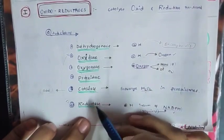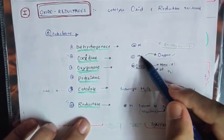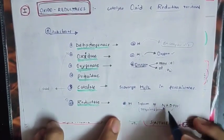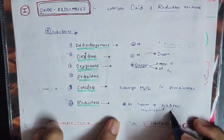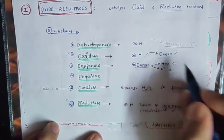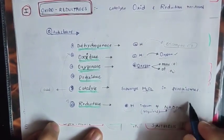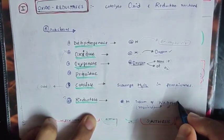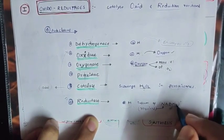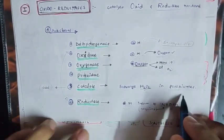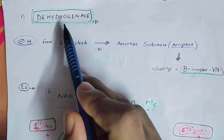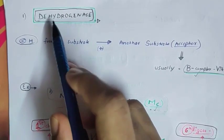Reductase means addition of hydrogen. For Oxidase, the acceptor is oxygen. For Reductase, NADPH is required — remember this. The hydrogen from NADPH is added to the substrate. So in the form of NADPH we add the hydrogen into the substrate. For Oxidase, acceptor is oxygen.